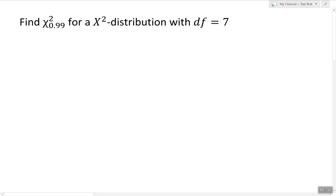In our case, we're looking for chi-square 0.99 with 7 degrees of freedom. To find the answer to this question, we simply look for the row corresponding to 7 degrees of freedom in the chi-square table.